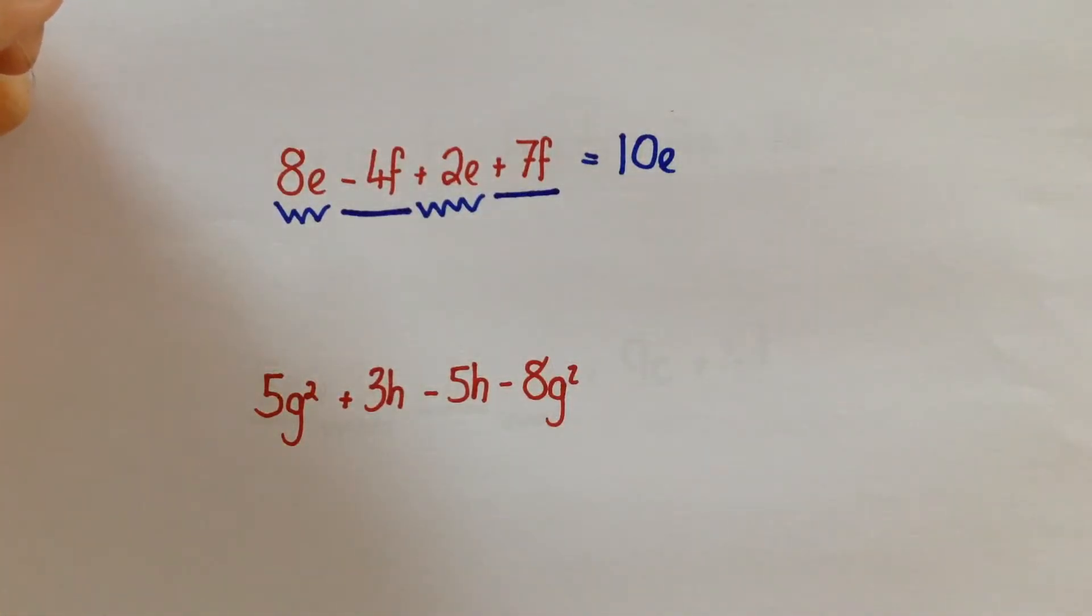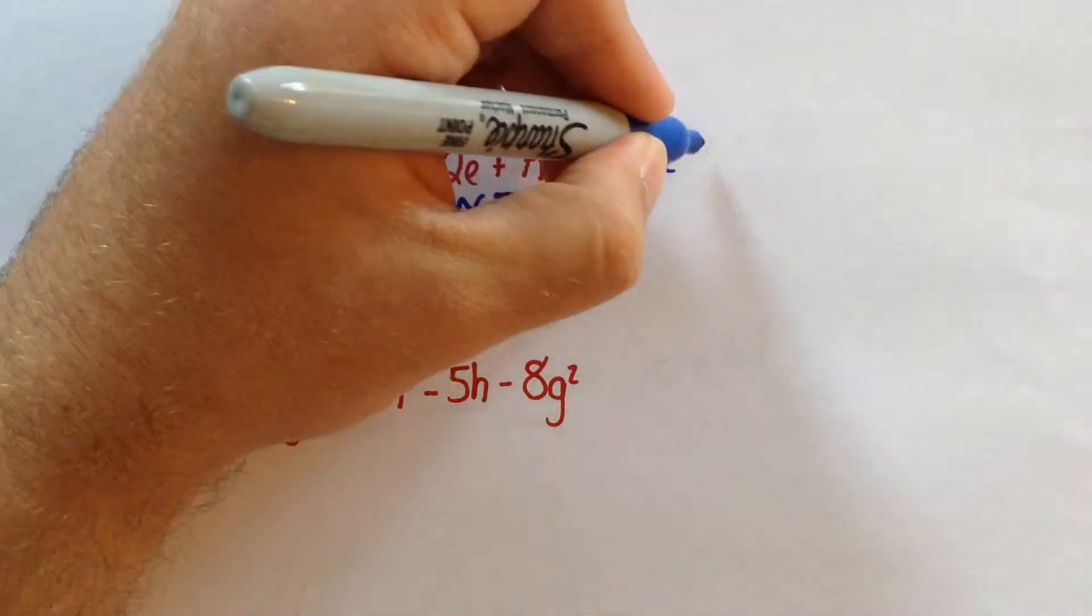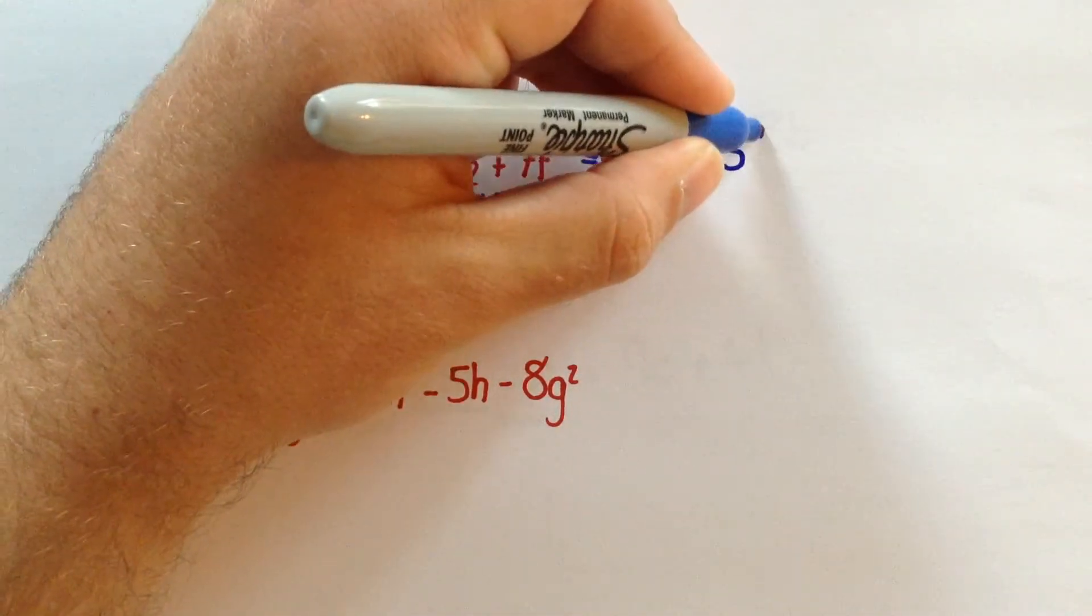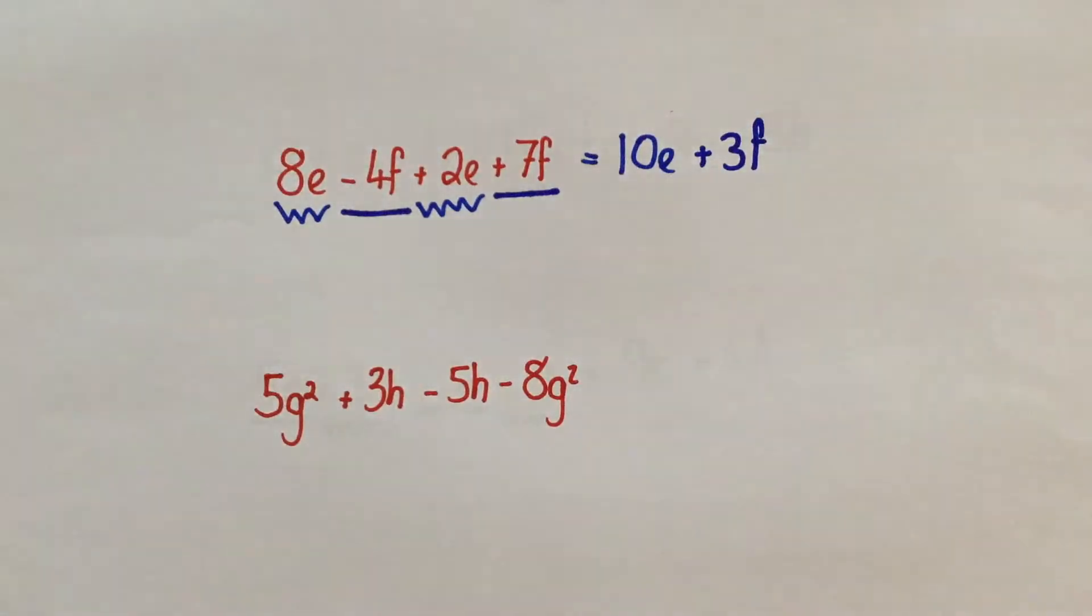So starting at minus 4, adding on 7, so going up your number line, you would get to positive 3. So that would become plus 3F.